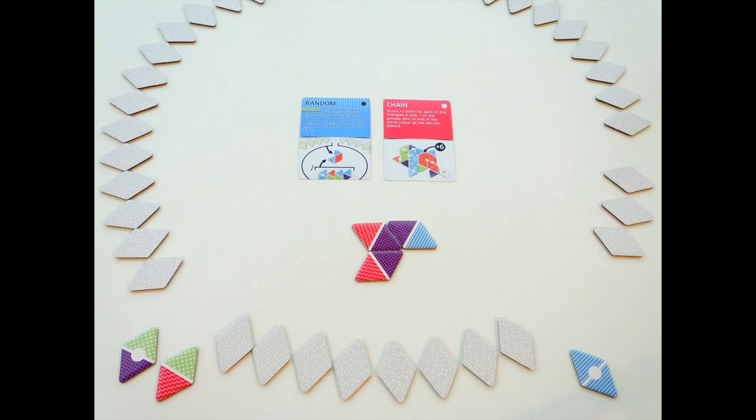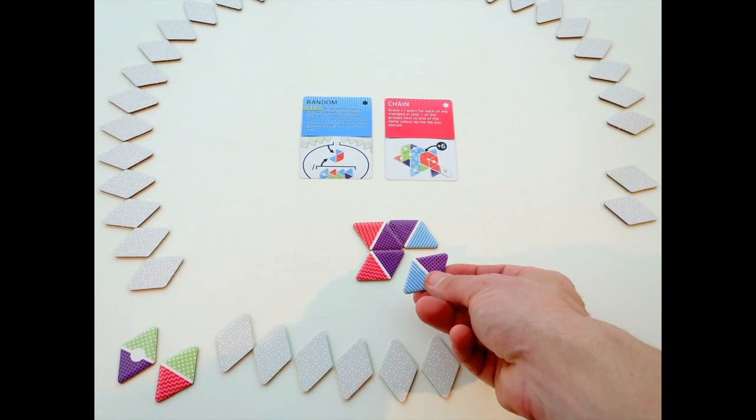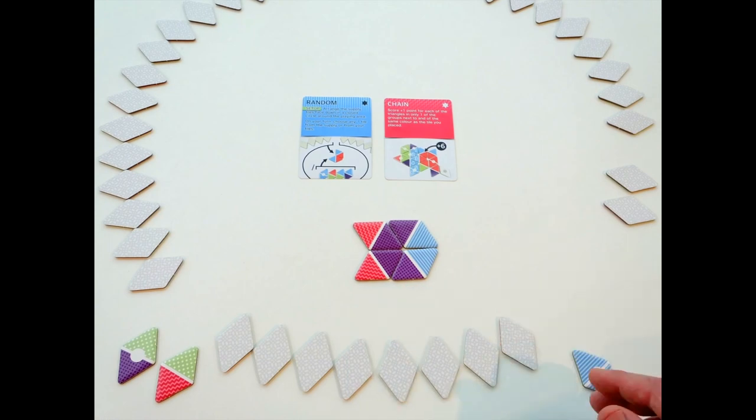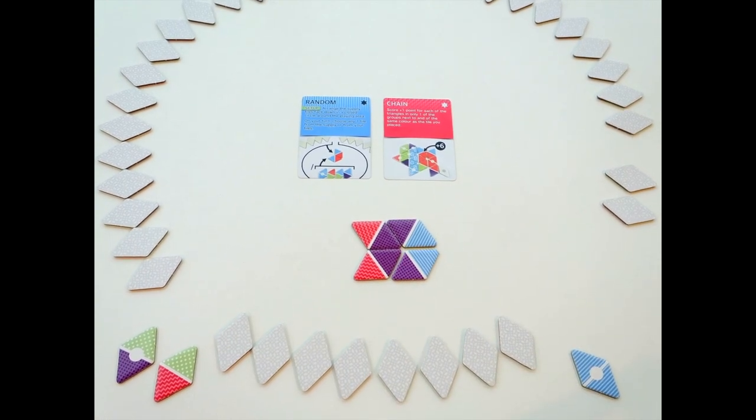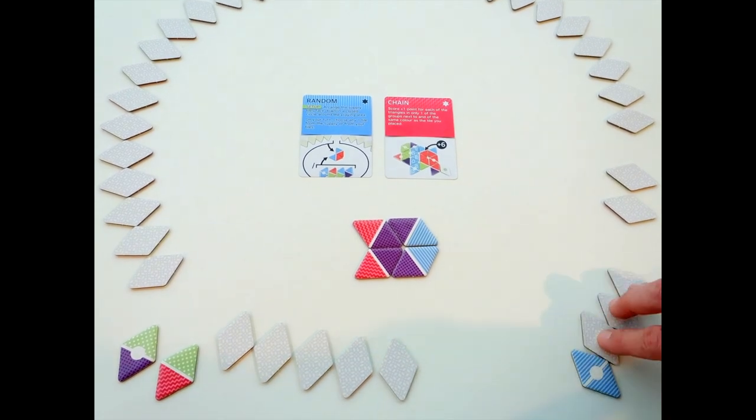The first player then takes another tile. It matches two colors in the playing area. However, the chain rule card states that you only count one group. Naturally they choose the larger group which has three triangles and they score three points.